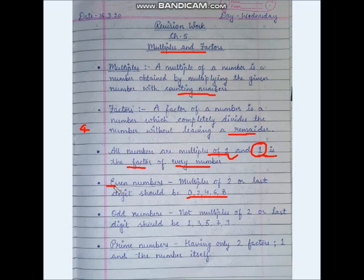Even numbers are those which end in 0, 2, 4, 6, or 8. Odd numbers are those which end in 1, 3, 5, 7, 9, and so on. Those are called odd numbers.